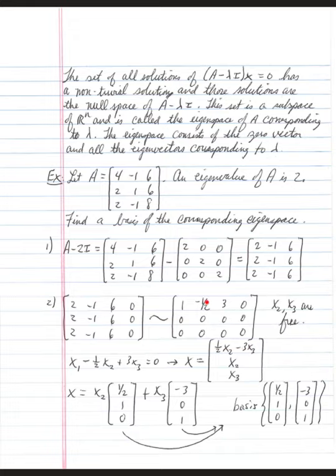x1 minus 1 half x2 plus 3 x3 is equal to 0. That's what this top row translates into. So, x1, if you solve for it, you get a positive 1 half x2 and a minus 3 x3. Solving for x1, you get this top entry. Because x2 and x3 are free, I'm just going to list them, x2, x3. But carefully solve for x1 and write it in terms of x2 and x3.